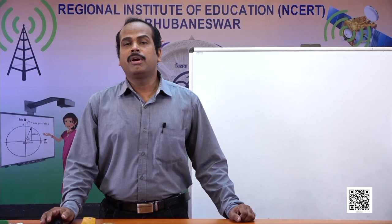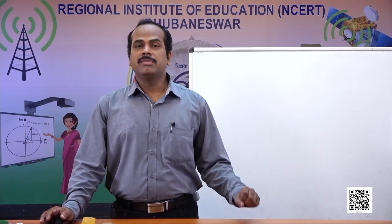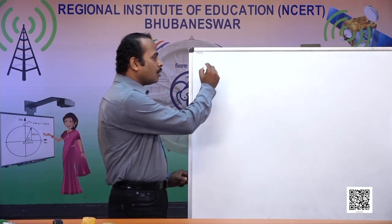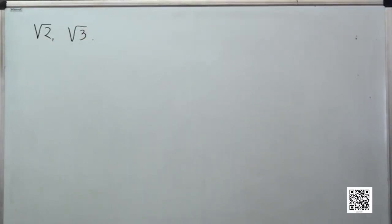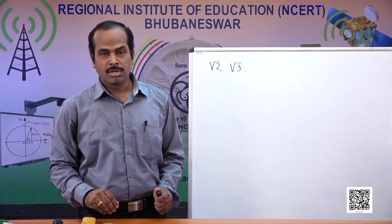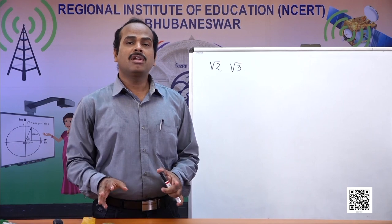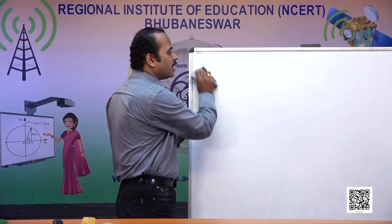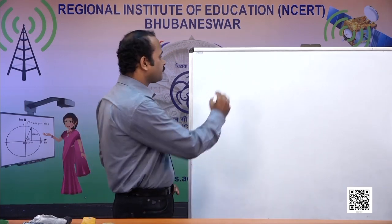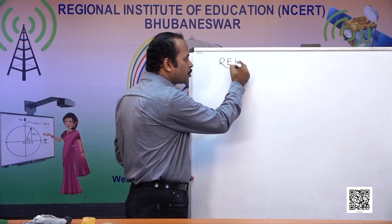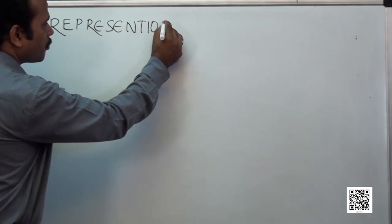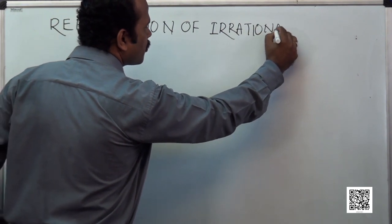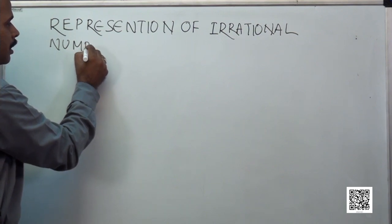We have already discussed different forms of irrational numbers, and one of them is the real algebraic form, also called the SOD form. Irrational numbers can be presented as root 2, root 3, and such types of forms. So how to present those numbers on the number line — let us learn now. Today's topic is representation of irrational numbers on the number line.